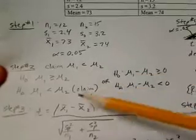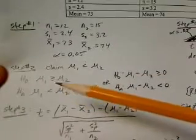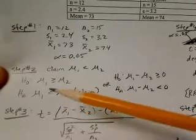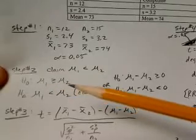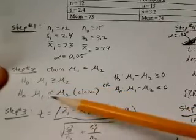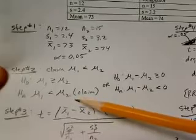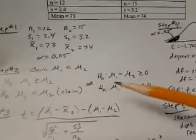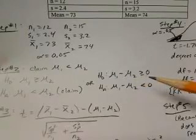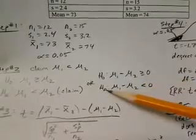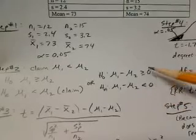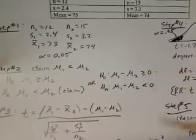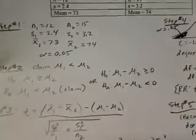Since our claim does not contain equality, we have to put that in the alternative hypothesis. And then we do the opposite for the null hypothesis because it has to contain equality. So μ1 is greater than or equal to μ2 for the null hypothesis. The alternative is μ1 is less than μ2. Subtracting μ2 from both sides, we could have written it as μ1-μ2≥0 for the null hypothesis, and for the alternative, μ1-μ2<0. The reason we need this is for these numerical values obtained from the null hypothesis to be used in our test statistic in step number three.